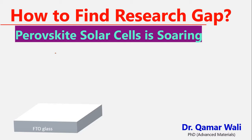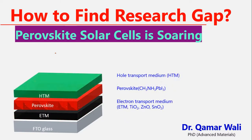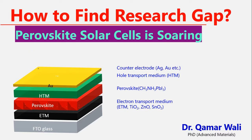Let's see what the basic structure of a perovskite solar cell looks like. It has two electrodes: the counter electrode and the working electrode, which just collect the generated hole and electron charges. There is also the hole transport medium and the electron transport medium, and this is called the perovskite layer.